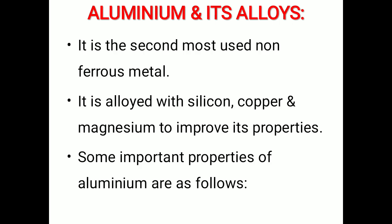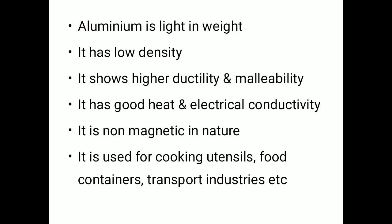Aluminium and its alloys: aluminium is the second most used non-ferrous metal. It is an alloy which contains silicon, copper and magnesium to improve its properties. Some important properties of aluminium are: it is light in weight, it has low density, it shows higher ductility and malleability, it has good heat and electrical conductivity, and it is non-magnetic in nature. It is used for cooking utensils, food containers and transport industries.